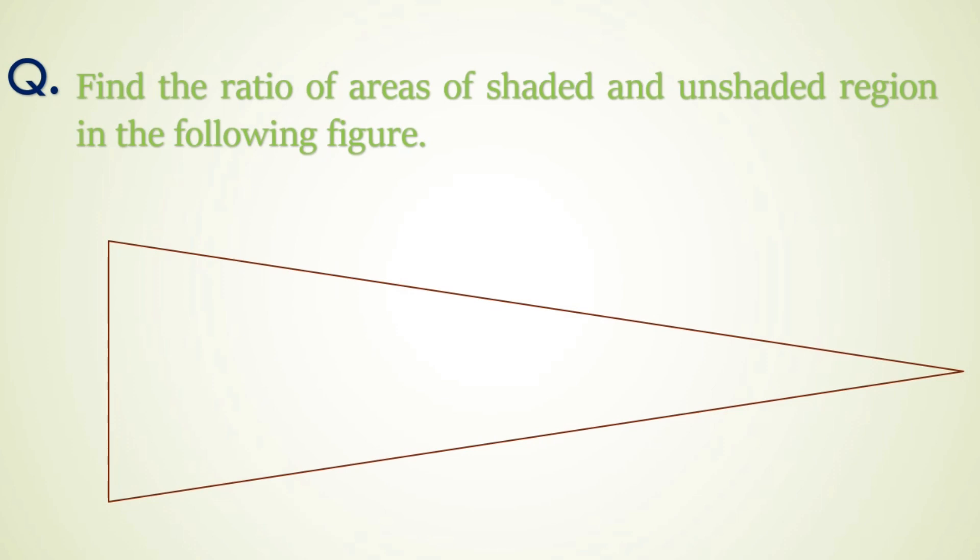Here we have an isosceles triangle. There is a circle inscribed in it which is touching all three sides of the triangle and another circle is touching the previous circle and two sides of the triangle and in the similar way many circles are drawn here.